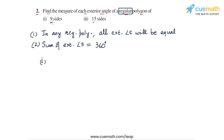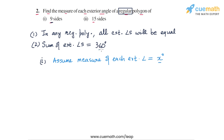In part 1, we have a regular polygon of 9 sides and we have to find the measure of each exterior angle. Assume that the measure of each exterior angle is equal to x degrees. The sum of all 9 exterior angles, each measuring x degrees, should be equal to 360 degrees. So 9x = 360 degrees, which gives us x = 360 ÷ 9 = 40 degrees.